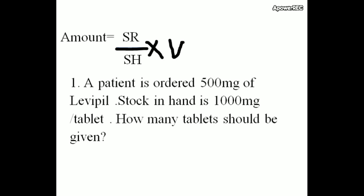Amount is equal to SR by SH into V. SR means stock required. That means stock needed to administer or given to the patient. SH means stock in hand into volume. V means volume.